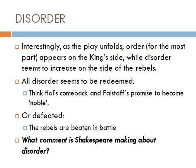As the play unfolds, order for the most part appears on the king's side, while disorder seems to increase on the side of the rebels. By the end of the play, all disorder seems to either be redeemed — Hal starts to act as he should, and Falstaff even promises to act more nobly — or defeated, as the rebels who were still out of order have been beaten at Shrewsbury. A key question is: what comment is Shakespeare making about disorder through all of this?